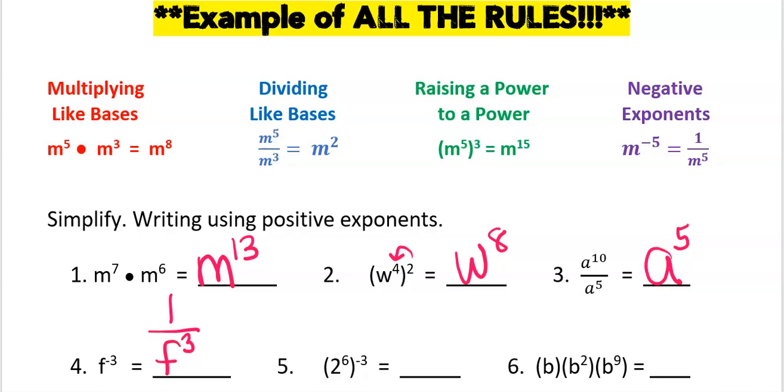Number five is raising a power to a power. But since my power is negative, I need to go one step further. Take the reciprocal, make the power positive.